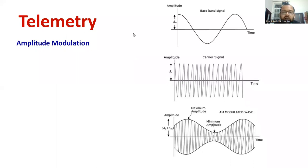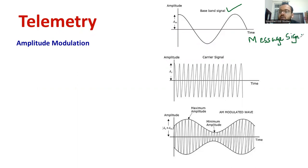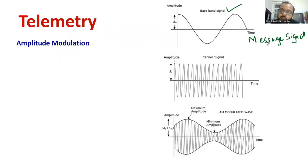Now I would like to show you the simple diagram of amplitude modulation. As you can see, we have a baseband signal, also known as the message signal. My objective is to transmit the message signal for a long distance — for example, it may be the output of measuring instruments or the output of a signal conditioning device. The technique used here is modulation, specifically amplitude modulation.